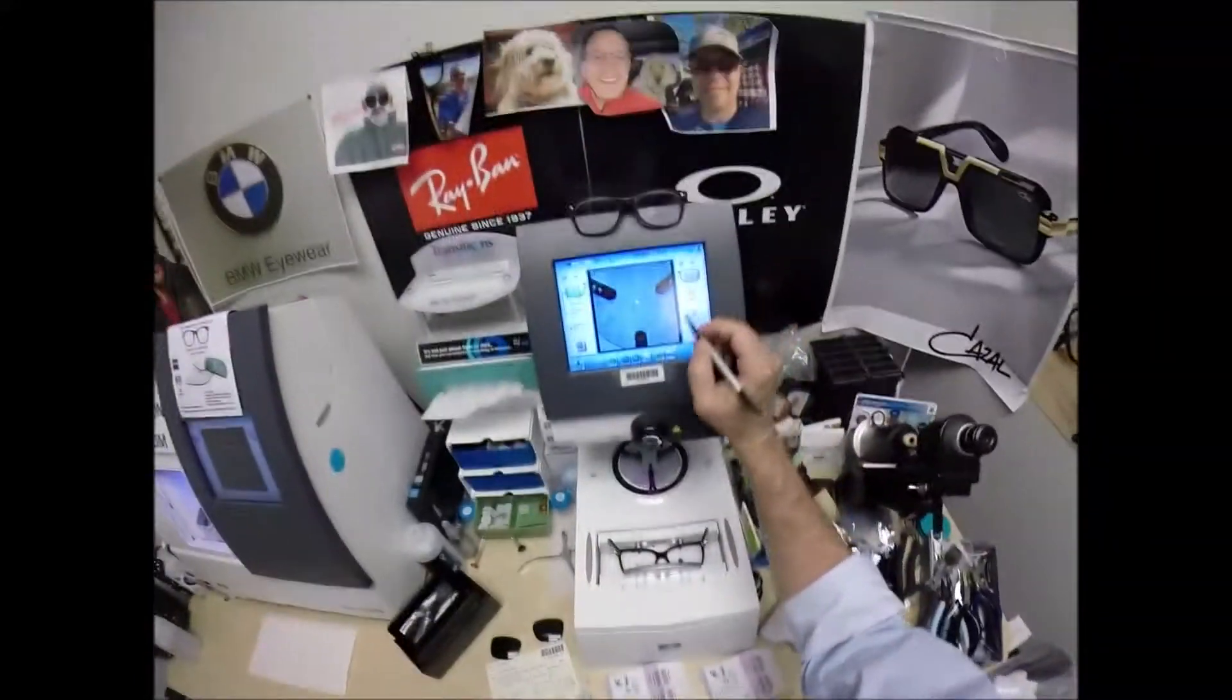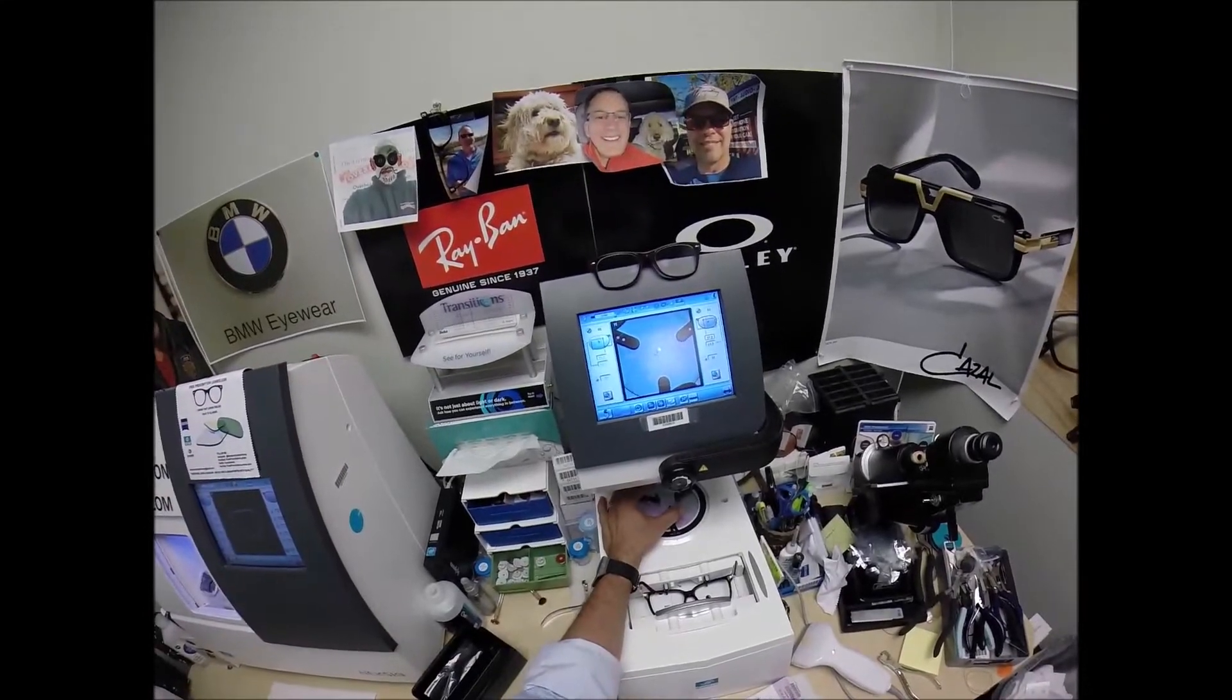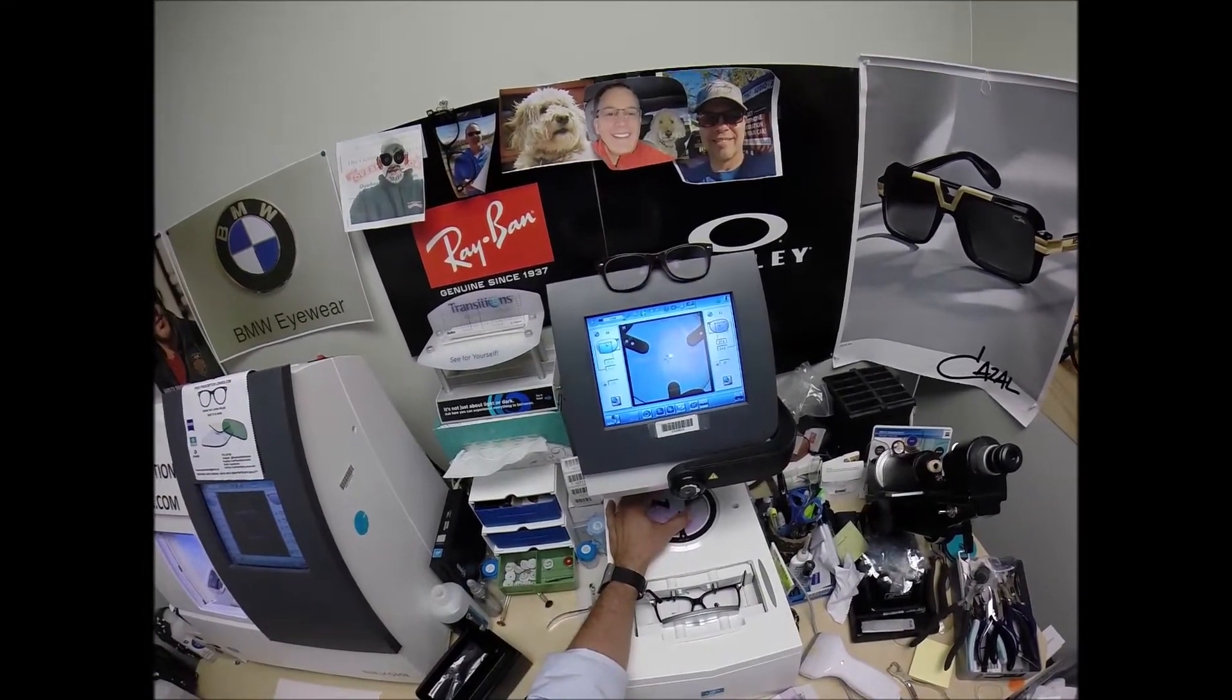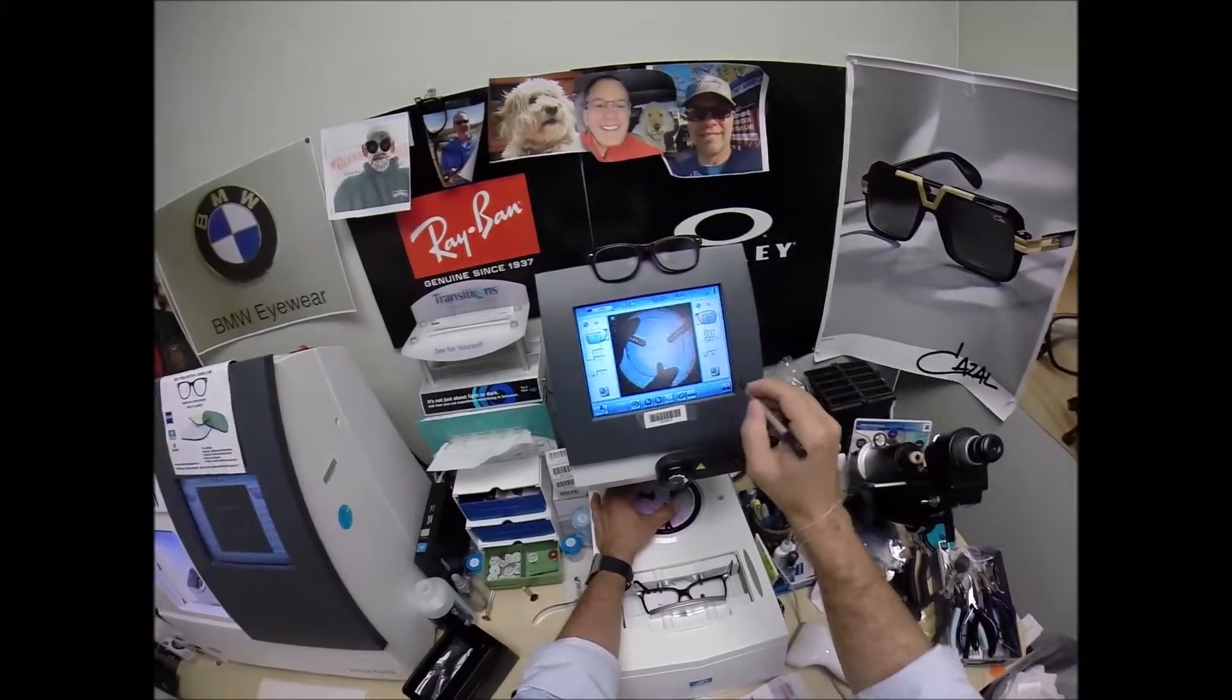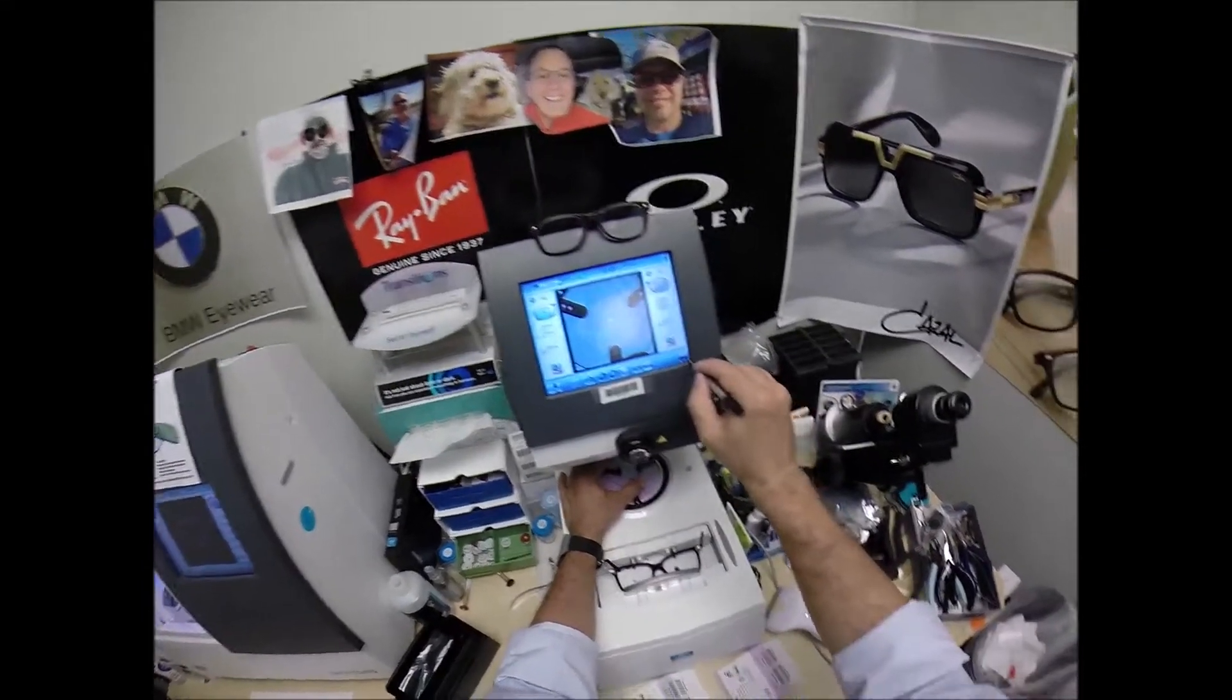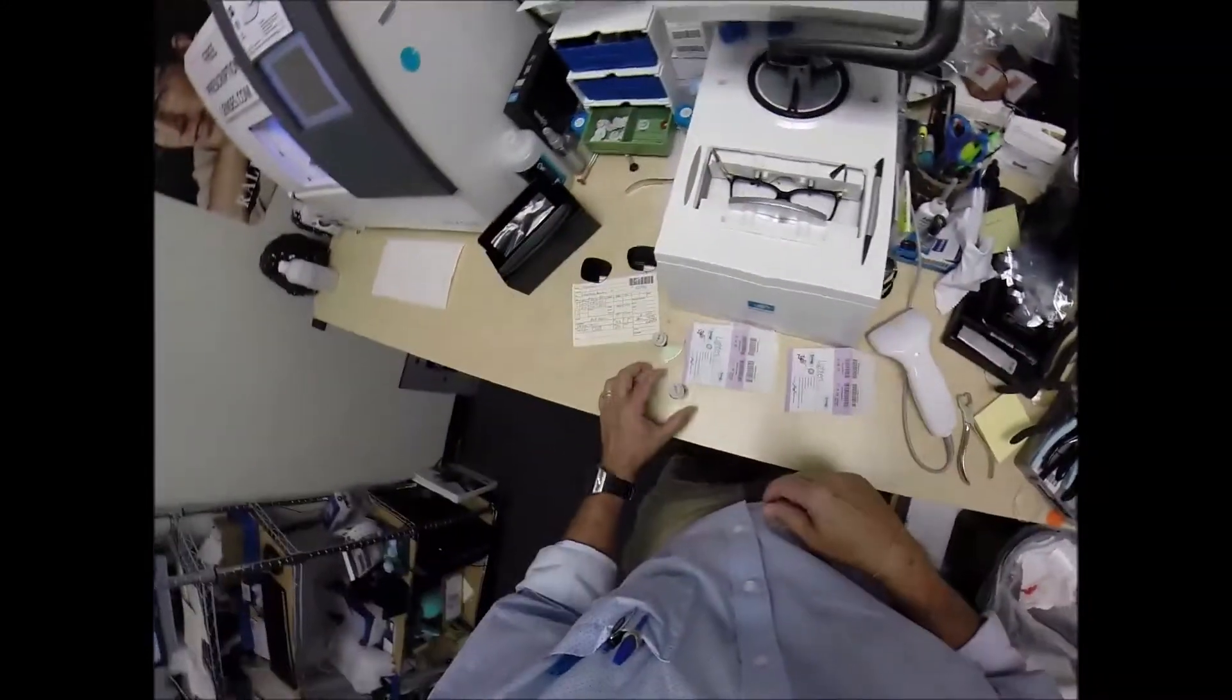The pupillary distance for the left eye is 37. I'm going to raise that up there. Get that laid out just perfectly. Make sure the lens is large enough. And it is. Hit that button. The arm comes down. Places the block onto the left lens.